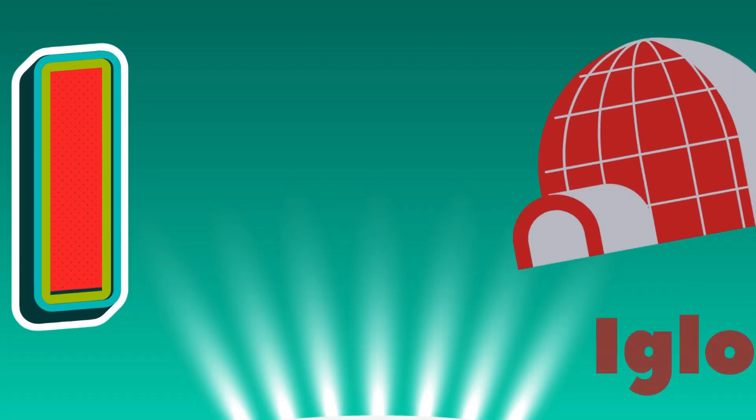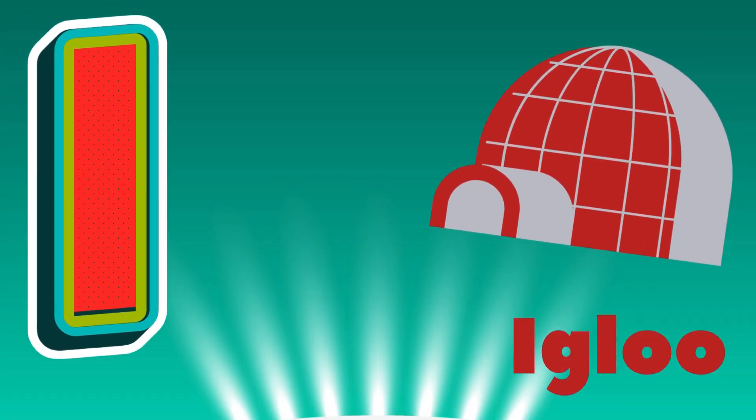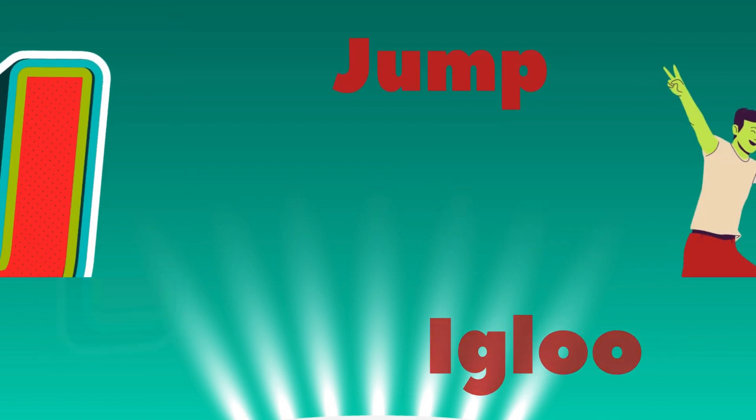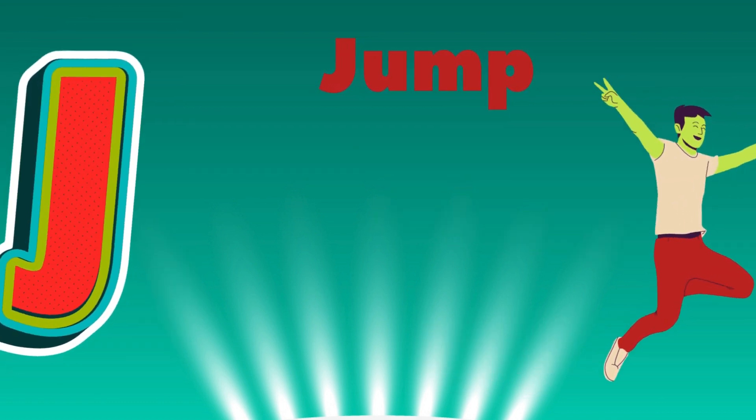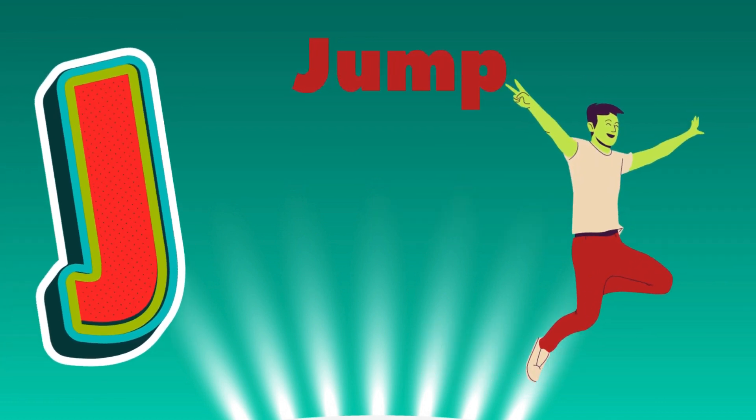I is for igloo, i-i-igloo. J is for jump, j-j-jump.